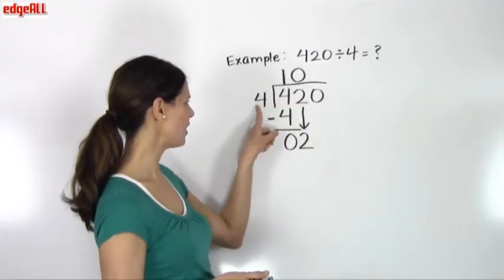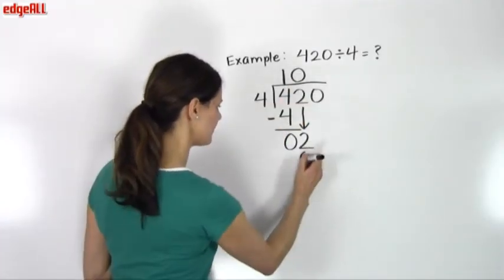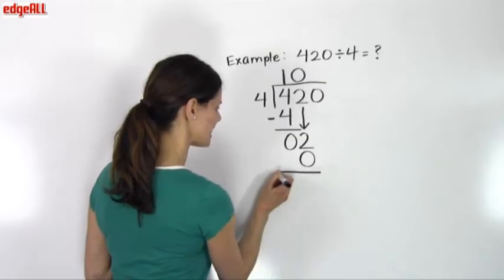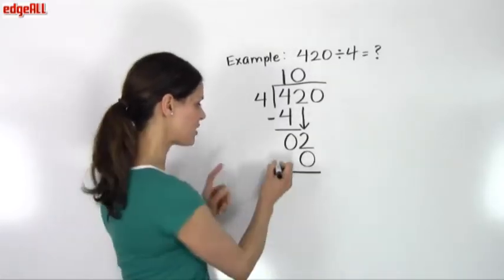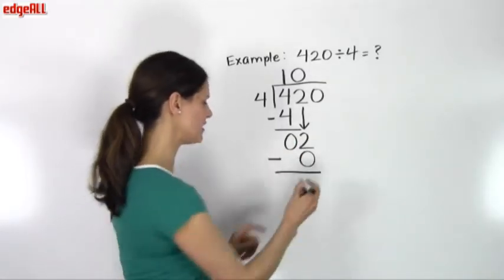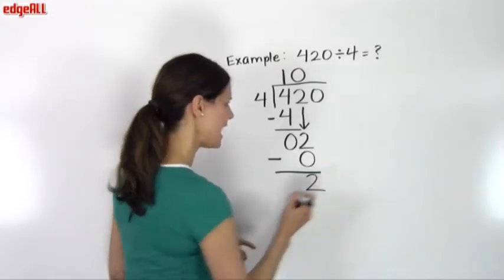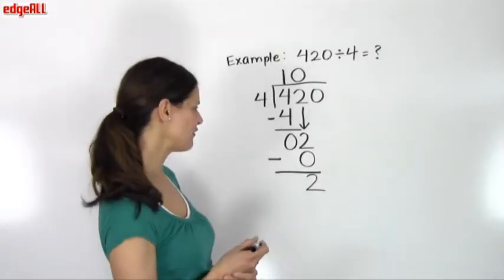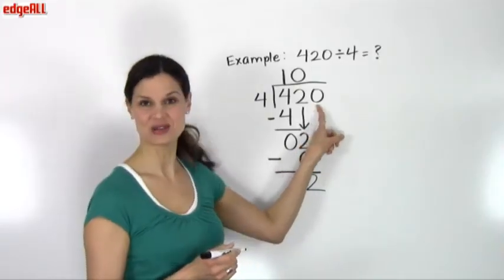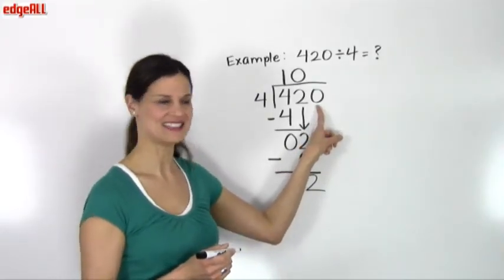I do 0 times 4 equals 0, and place that number right here. I subtract 2 minus 0 equals 2, and I still have one more calculation to perform. I still have one more digit to work with in my dividend.